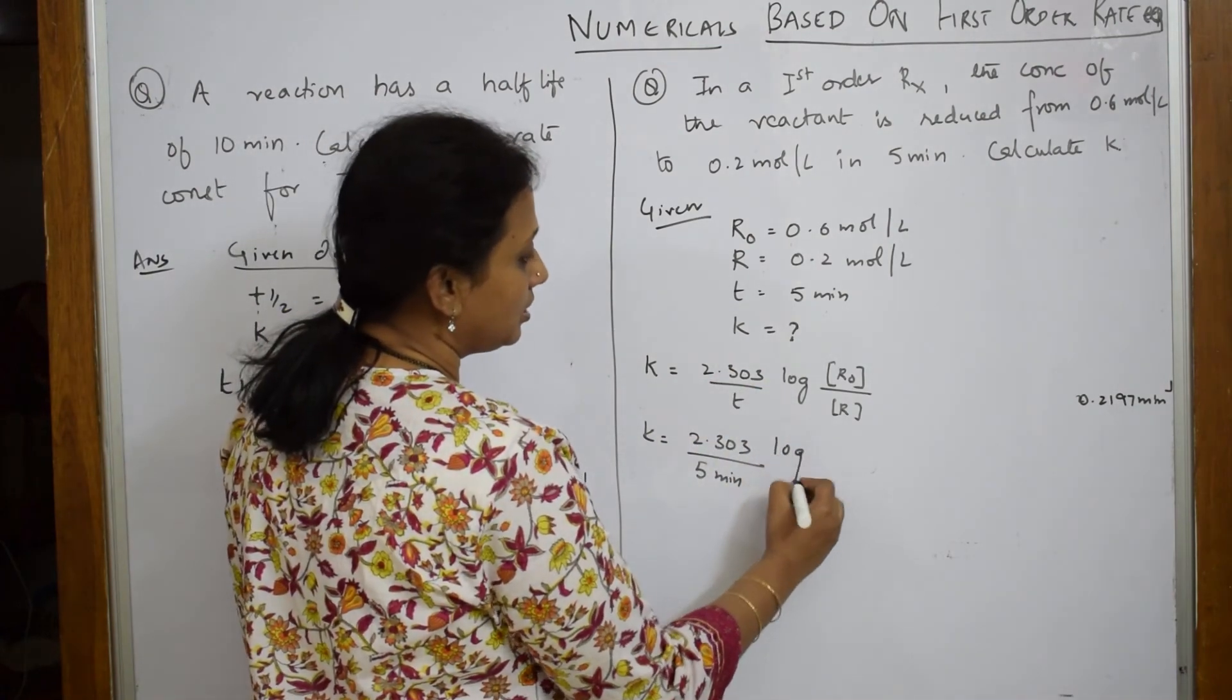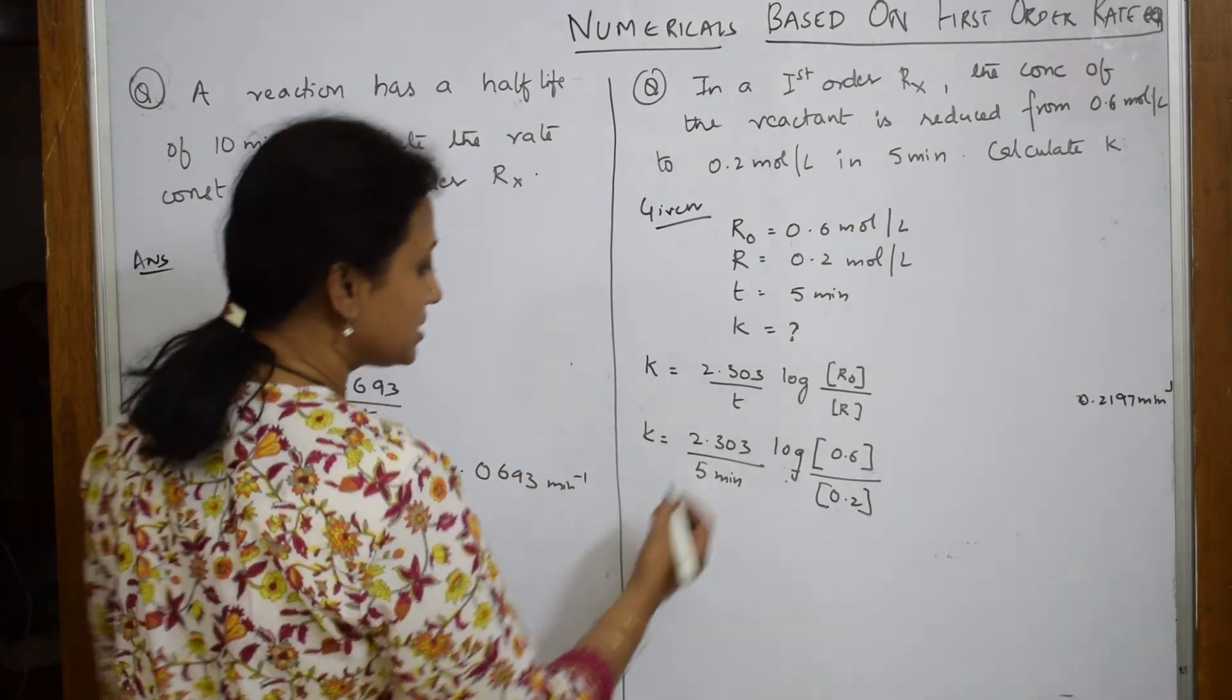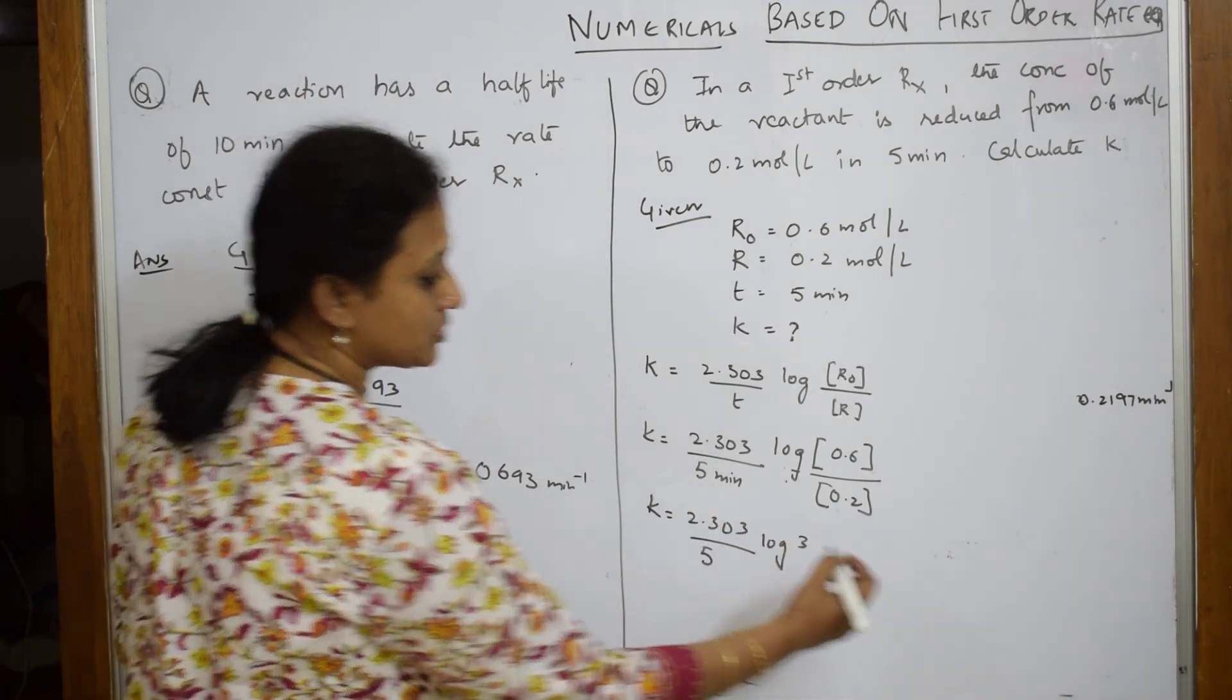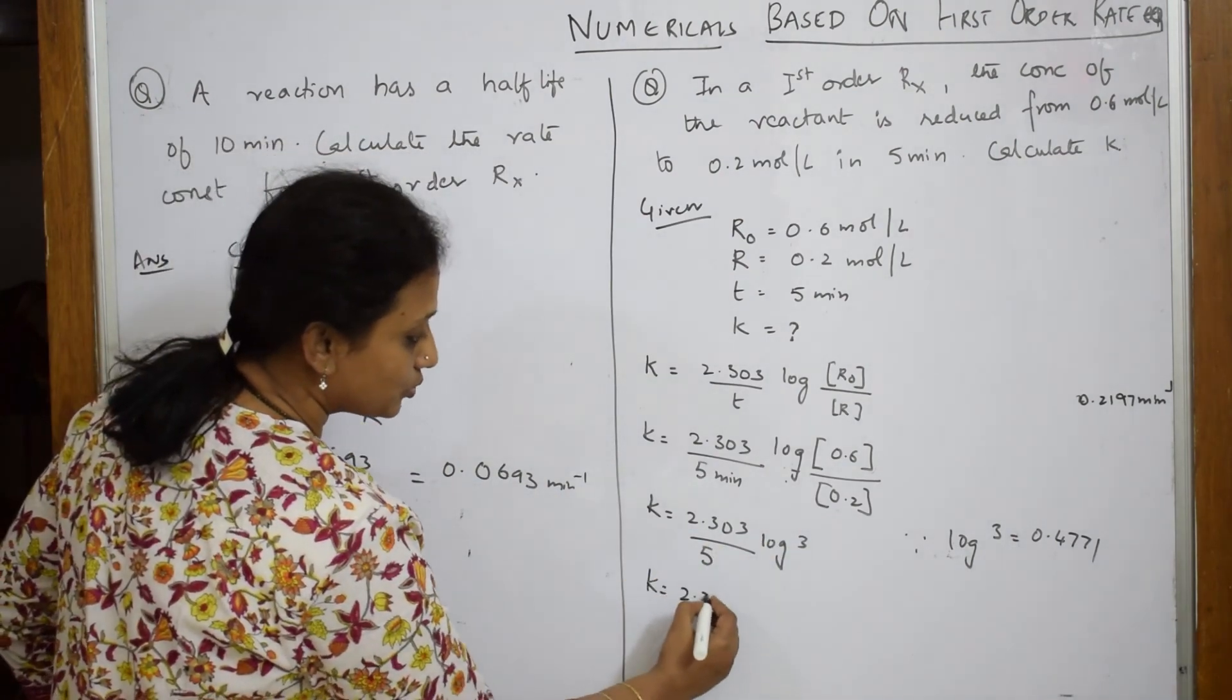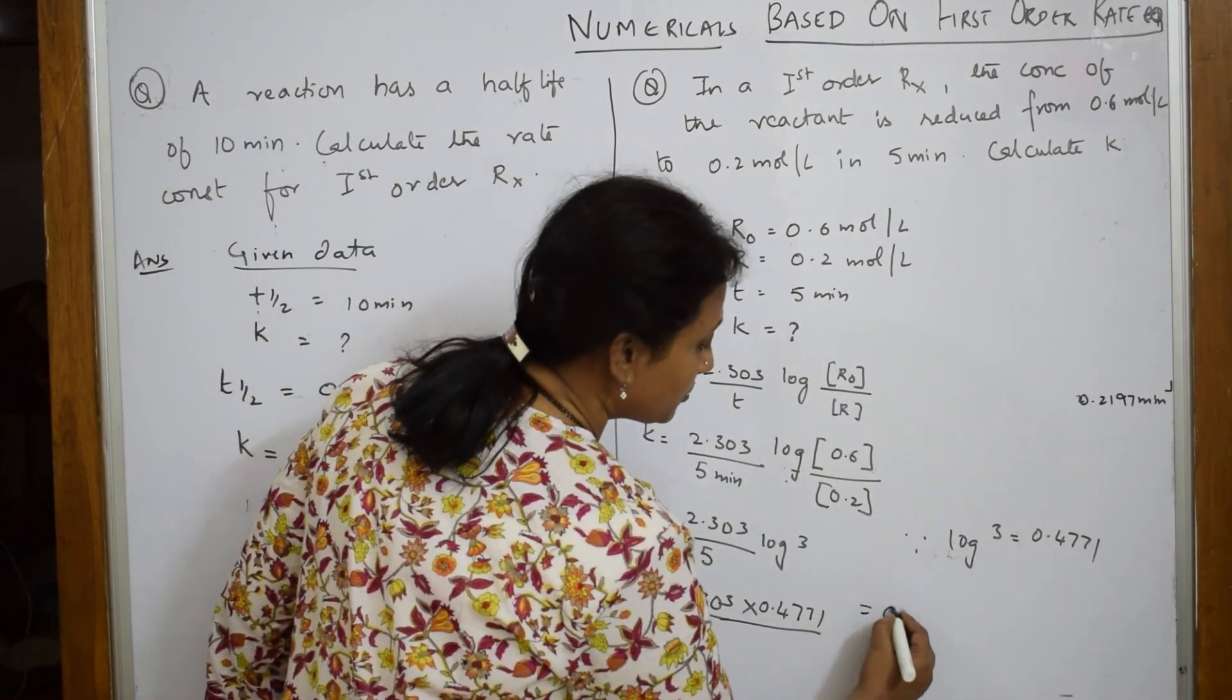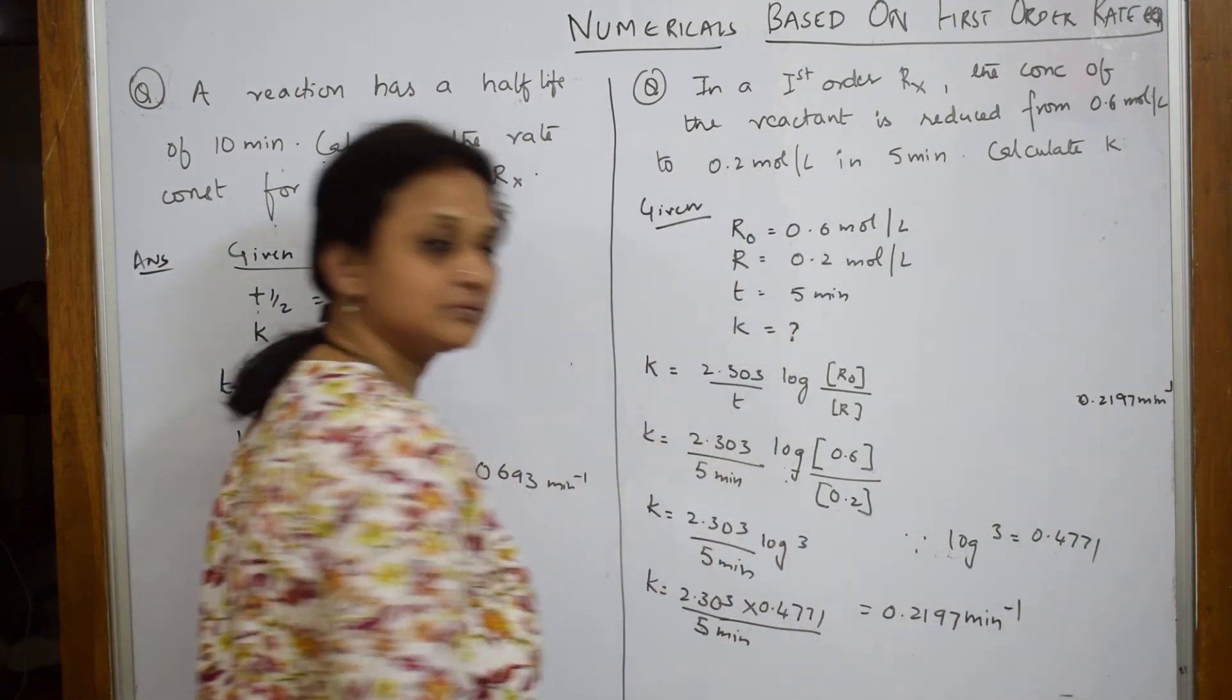So, how much this comes to? This comes to 0.6 by 0.2 comes to 3, isn't it? So, k is equal to 2.303 by 5 log 3. So, log 3 is 0.4771. So, substitute it. Since log 3 is 0.4771, substitute that value here. k is equal to 2.303 by 5 into 0.4771. Finally, you get an answer of 0.2197. So, 0.2197 minutes because this is 5 minutes, isn't it? This is also 5 minutes. When this goes above, this becomes minute inverse. So, this is the answer.